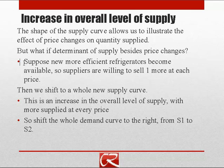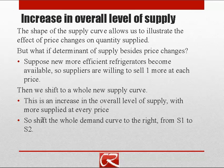As a scenario, let's suppose that more efficient refrigerators become available. Ice cream suppliers are willing to sell one more ice cream cone at each price because the lower costs make selling ice cream more profitable. That's going to cause us to have a new supply schedule and we're going to shift to a whole new supply curve with more supply at every price.